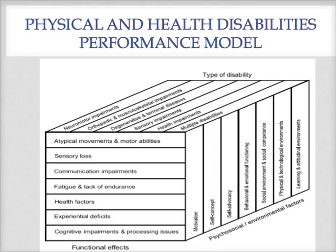The model on the screen is the Physical Health Disabilities Performance Model. It has three different categories: type of disability, functional effects, and psychosocial and environmental factors. Type of disability includes things like neuromotor impairments such as cerebral palsy, degenerative or terminal diseases like muscular dystrophy, or health impairments like sickle cell, where students may be out of school a lot or feel lethargic and tired.